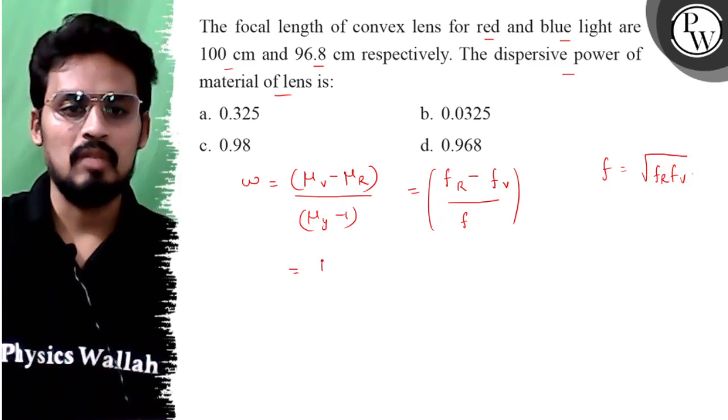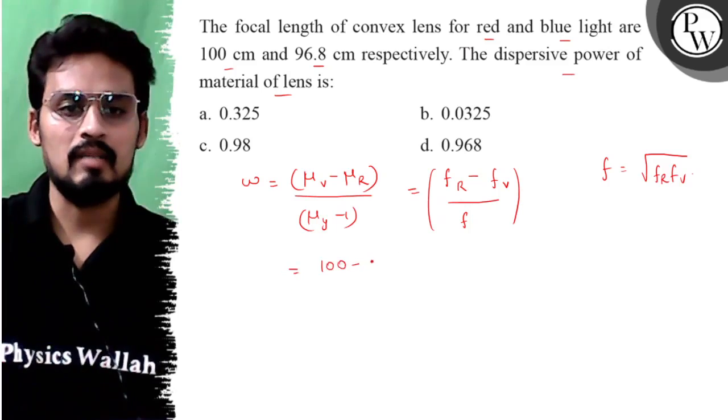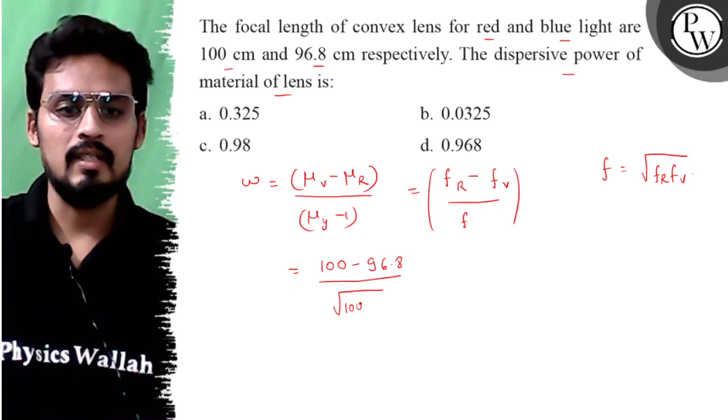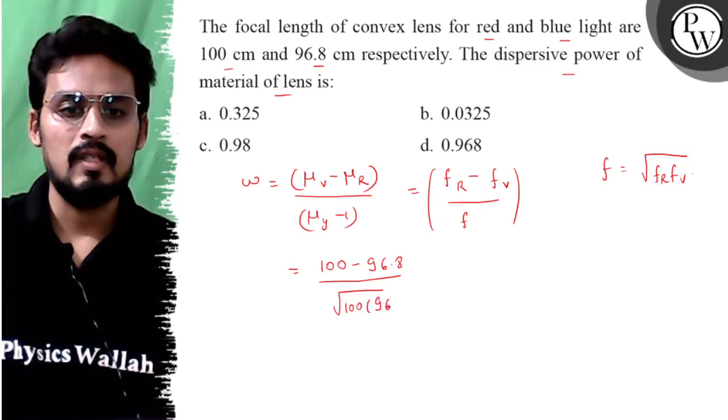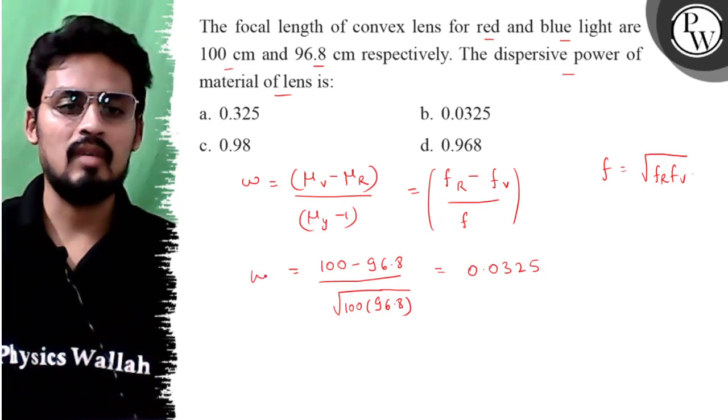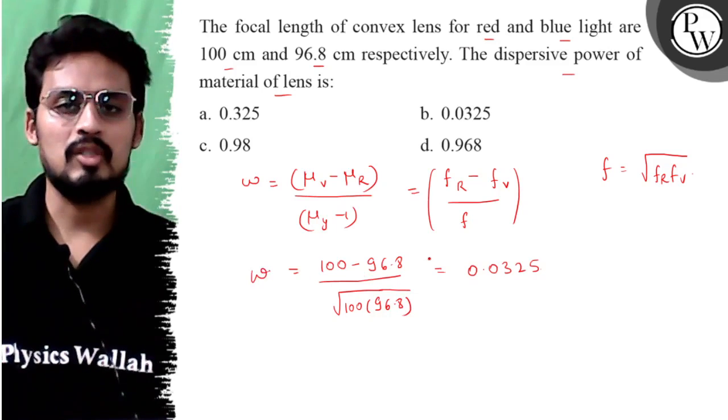So if I solve this, the value I get is 100 minus 96.8 whole upon square root of 100 into 96.8. If I calculate this, the final value comes out to be 0.0325. This is my dispersive power.